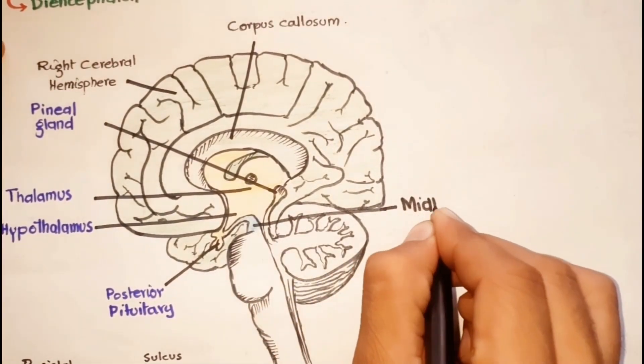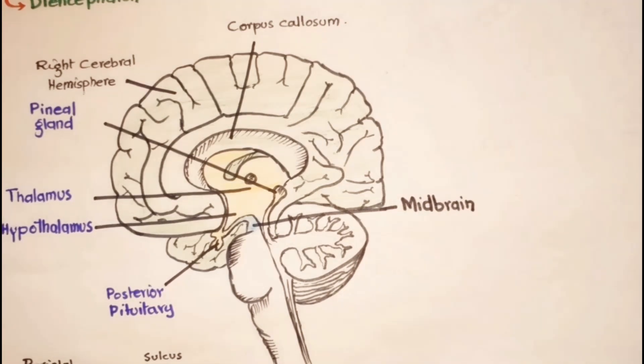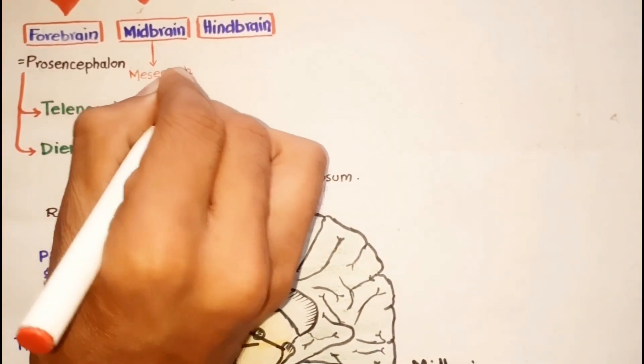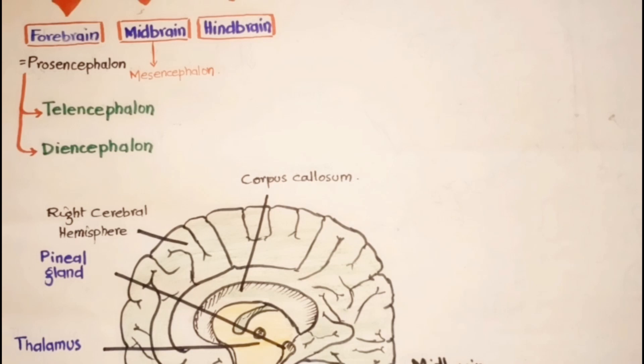After this we have the midbrain, which is the second part of the brain, also known as the mesencephalon, and it is located between the forebrain and the hindbrain.